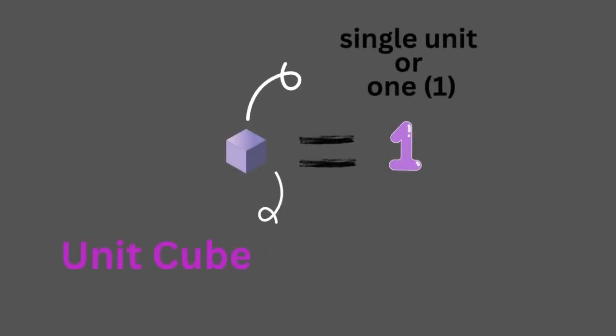The smallest block, which is a small cube, represents a single unit or one. We call it a unit cube.